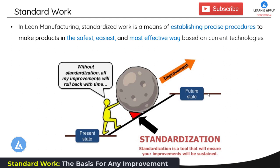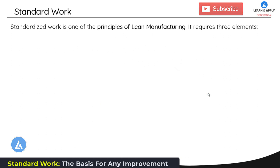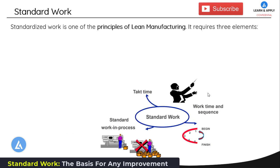Now let's understand what the important elements of standard work are. Standardized work is one of the principles in lean manufacturing which consists of three important elements. Looking at this diagram, the first element is takt time, the second is work sequence, and the third is standard in-process inventory. Let's understand each of these in detail.